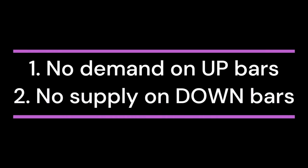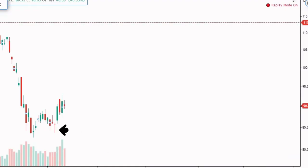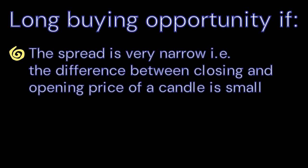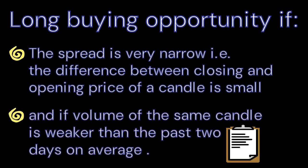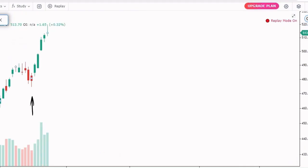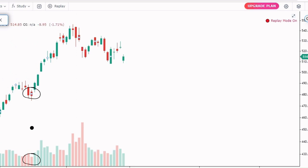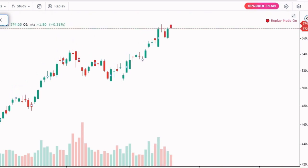The second strategy is No Supply on Down Bars, the opposite of the first. It means there are insufficient sellers to pull the market down, giving a long buying opportunity. The conditions are: the spread is very narrow — the difference between closing and opening price is small — and the volume is weaker than the past two days. Here both conditions are satisfied; the stock rose from 480 to around 620.